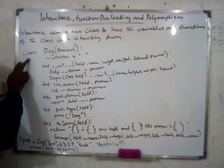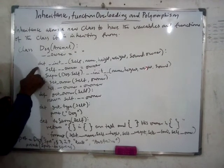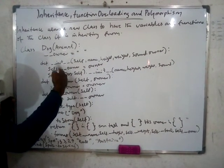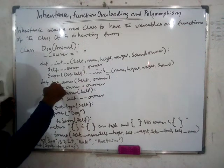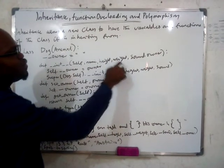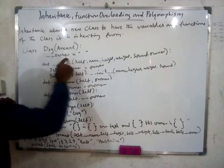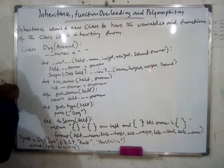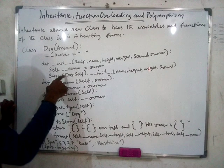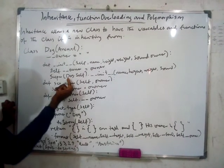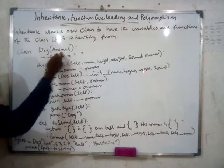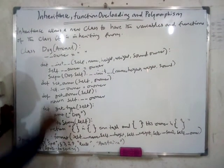We know that a class normally has features and functions. We represent the function by the constructor, which means you are initializing all the variables. So you have name, height, weight, sound, and now owner — that's your constructor. You say self.owner equals owner, and you call super() to call the parent Animal class, so that you can inherit all the features like name, height, weight, and sound.